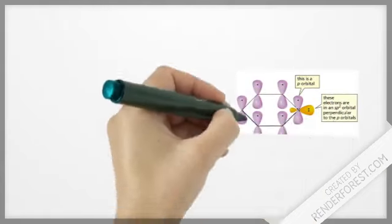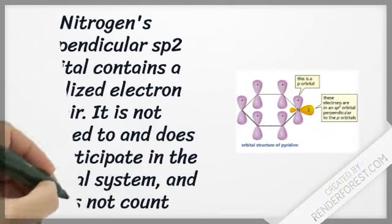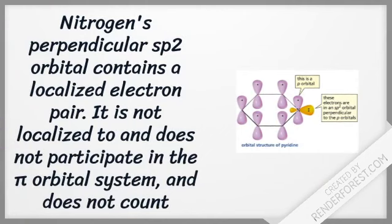Pyridine's perpendicular sp2 orbital contains a localized electron pair. It is not delocalized into and does not participate in the pi orbital system, and does not count towards the 4n plus 2 rule.